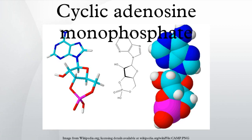Functions. cAMP is a second messenger used for intracellular signal transduction, such as transferring into cells the effects of hormones like glucagon and adrenaline, which cannot pass through the plasma membrane. It is involved in the activation of protein kinases and regulates the effects of adrenaline and glucagon.